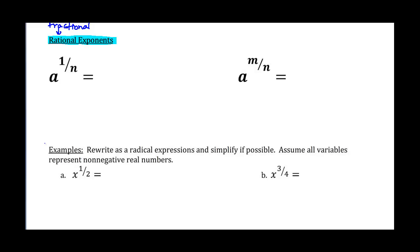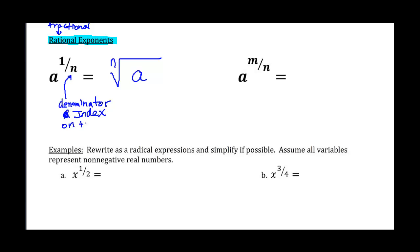We have a to the one over n. This is the exact same thing as seeing the nth root of a. The denominator — whatever is the denominator on your fraction — is your index on the radical. So if that's two, a to the one over two, that's the square root. If it's a to the one third, then we have a cube root, and so on.